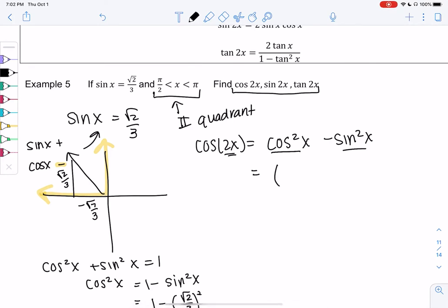So cosine squared will be negative root 7 over 3 squared, and then minus root 2 over 3 squared, which gives me 7 over 9 minus 2 over 9, which is 5 over 9.